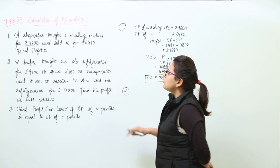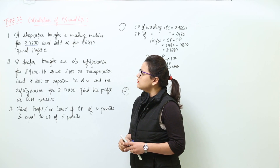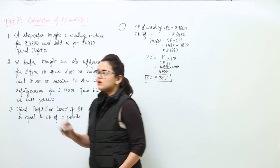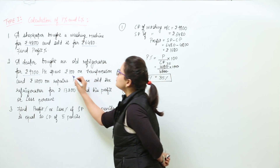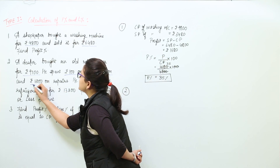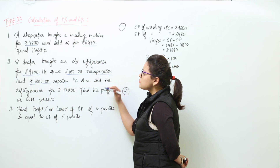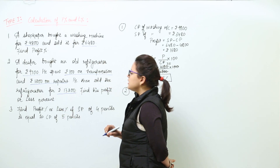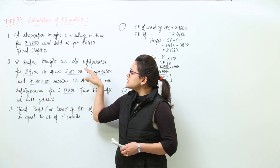Question number two: a dealer bought an old refrigerator for rupees 9700 — this is the cost price. He spent rupees 100 on transportation and rupees 1200 on repairs. He then sold the refrigerator at rupees 13200.